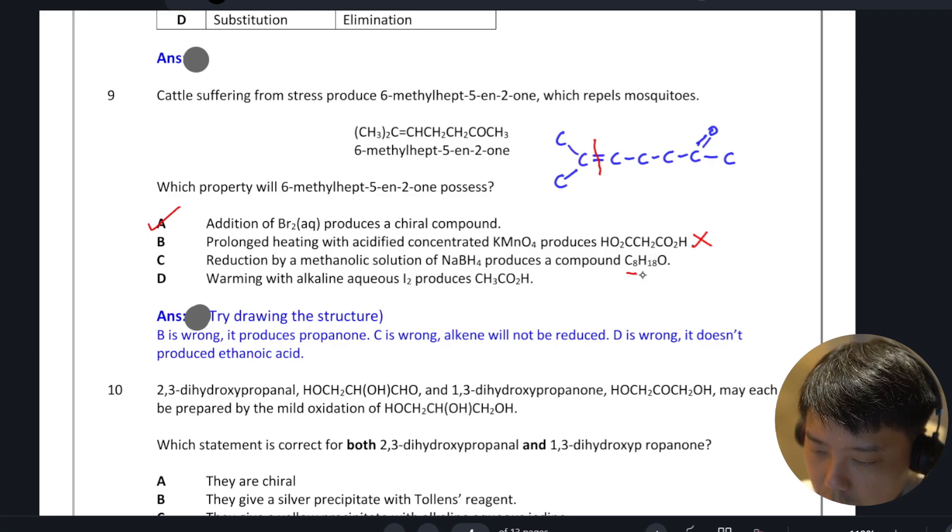Reduction by sodium boron hydride produces C8H18O. Okay, so let's see how many H do we have at the start. One, two, three, four, five, six, seven, eight, nine, ten, eleven, twelve, thirteen, fourteen. So we have fourteen, right? If we were to reduce by sodium boron hydride, we can only add two hydrogen, which means that it should be H16, not 18.